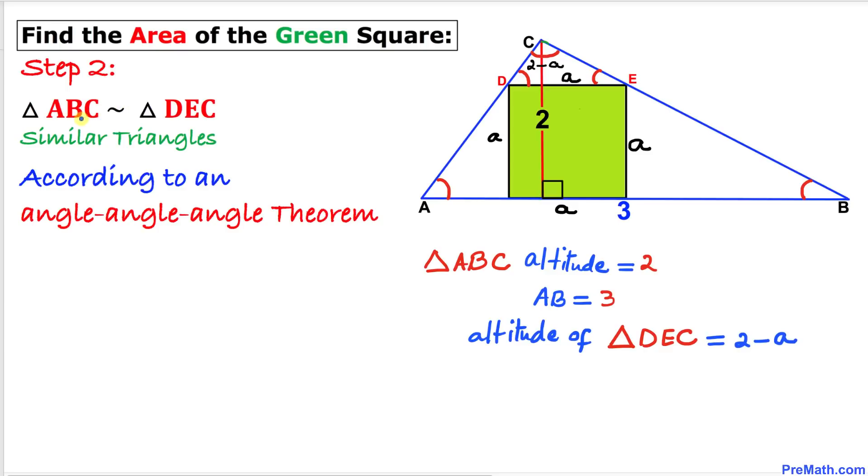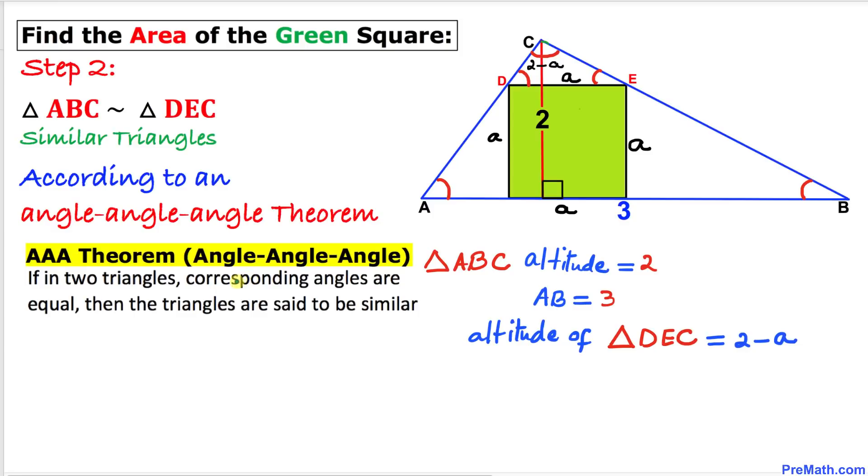Therefore we conclude that triangle ABC and triangle DEC are similar triangles according to angle-angle-angle theorem. If in two triangles corresponding angles are equal, then the triangles are said to be similar.